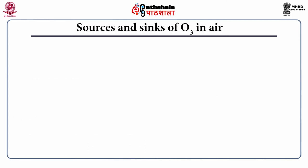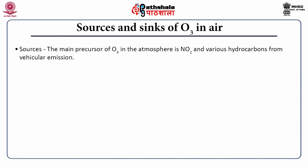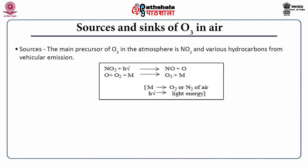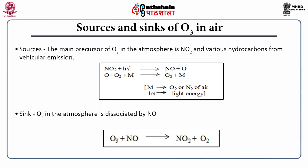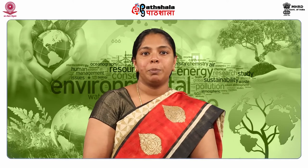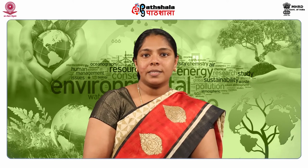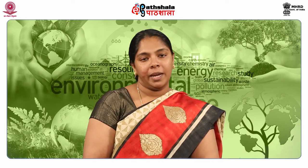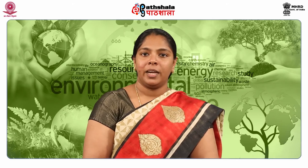Sources and sinks of ozone in air: the main precursor of ozone in the atmosphere is NO₂ and various hydrocarbons from vehicular emissions. NO₂ + hν produces NO + O, and this O + O₂ + M (where M can be O₂ or N₂) produces ozone + M. The sink of ozone is its dissociation by nitric oxide. Sources and sinks of suspended particulate matter: the sources are fossil fuel combustion, mainly diesel and coal, and the sink is dry deposition.